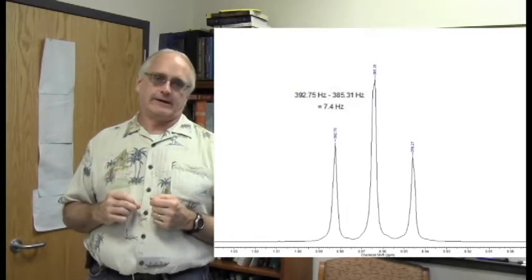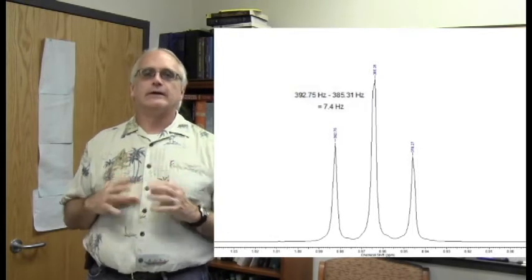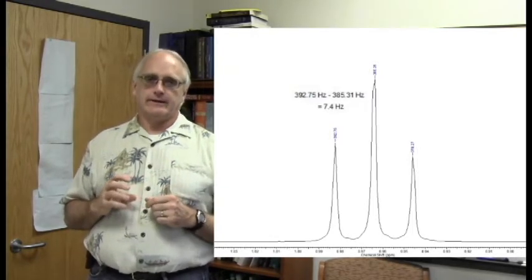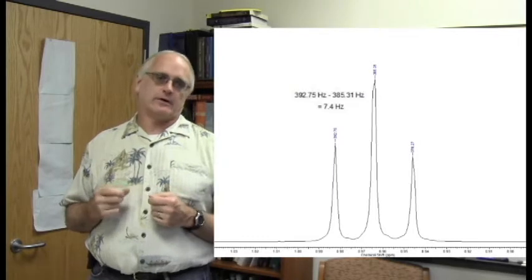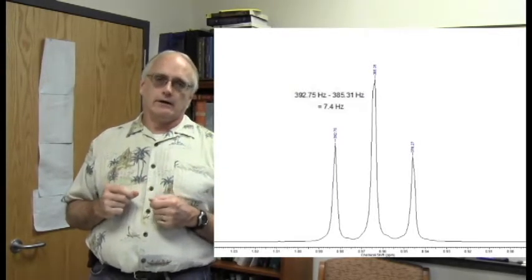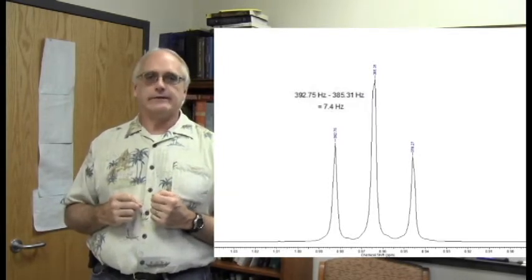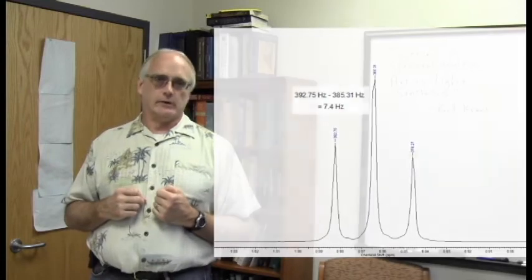That is how we measure coupling constants. How far apart the parts of a pattern like this, of a coupling pattern, like the 1, 2, 1 triplet really are. And here is the classic vicinal 3 bond 7 hertz coupling constant that we were talking about just a moment ago.